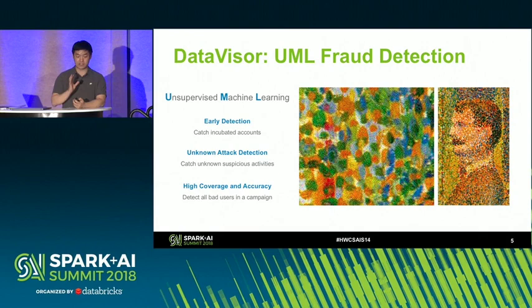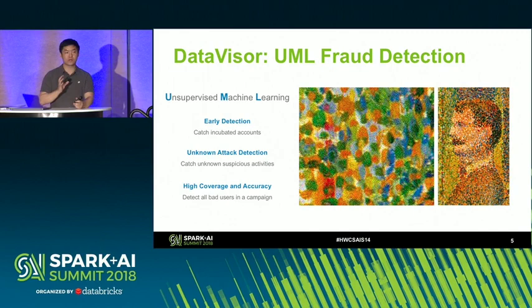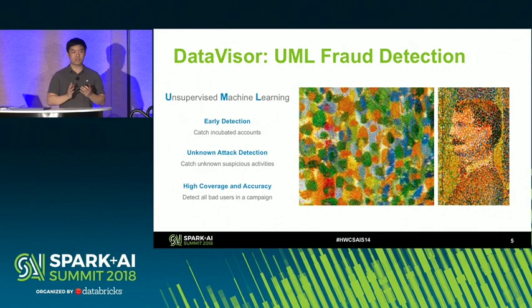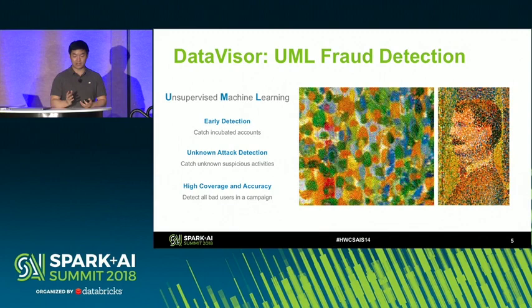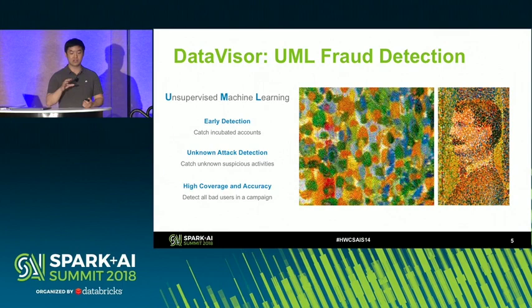The key algorithm we use is unsupervised machine learning. Unsupervised machine learning does not require labels telling the machine which are good or bad. Instead, the machine tries to figure out correlations between those activities. As a simple analogy: a single pixel on the left doesn't mean much, but if we look at the big picture on the right, we can clearly see a human — because we're looking at information at a different dimension. That's exactly the idea of unsupervised machine learning: it captures fraudulent activity from a higher dimension.